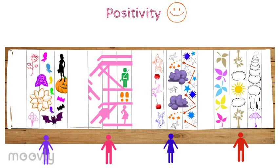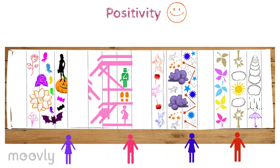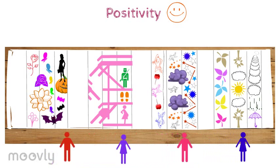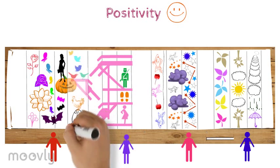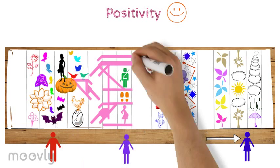For one more time the participants move a seat to the right and finish the drawing by connecting the strips. Logically, one participant will not be drawing this round.